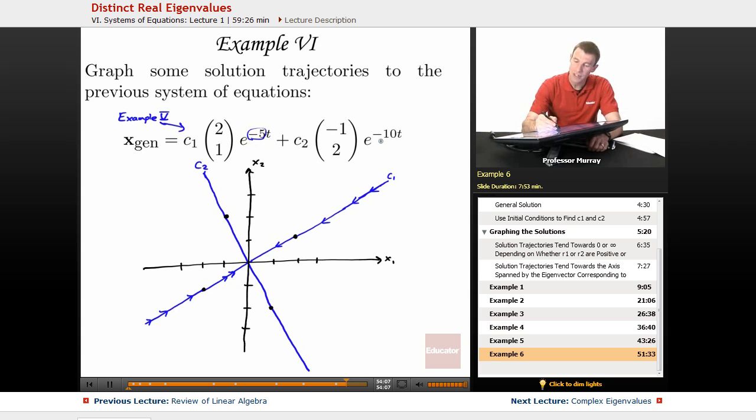And now my second one, I see the eigenvalue there is negative 10. That means the solutions are also getting smaller on the second axis. So all of these solutions are drifting into 0.